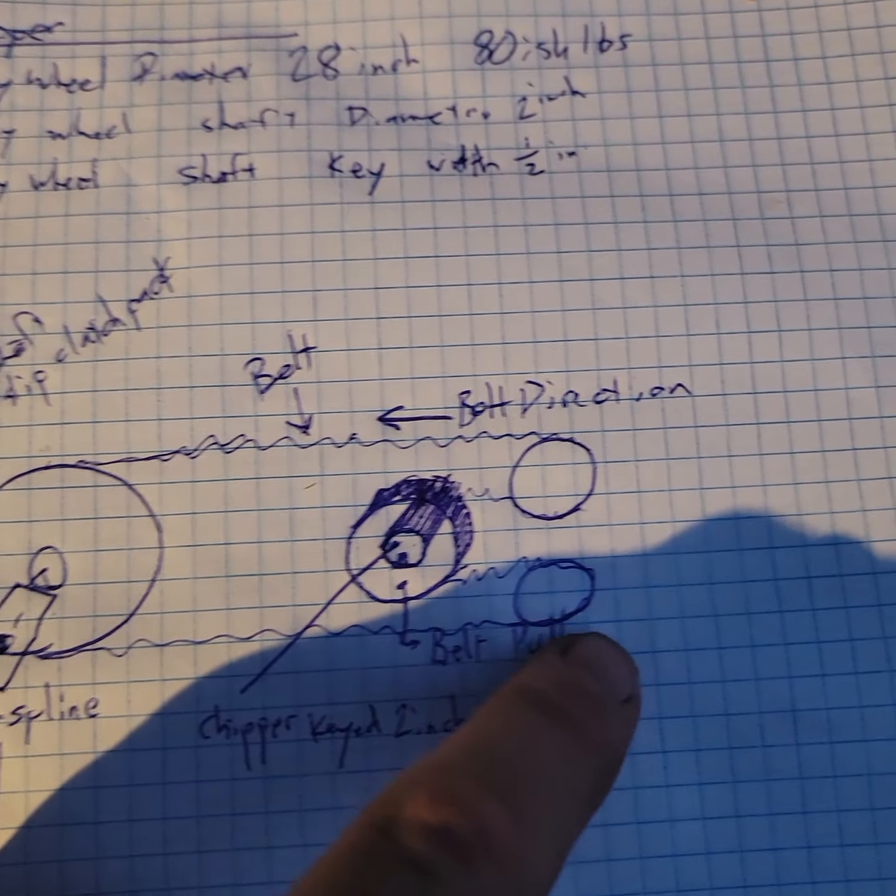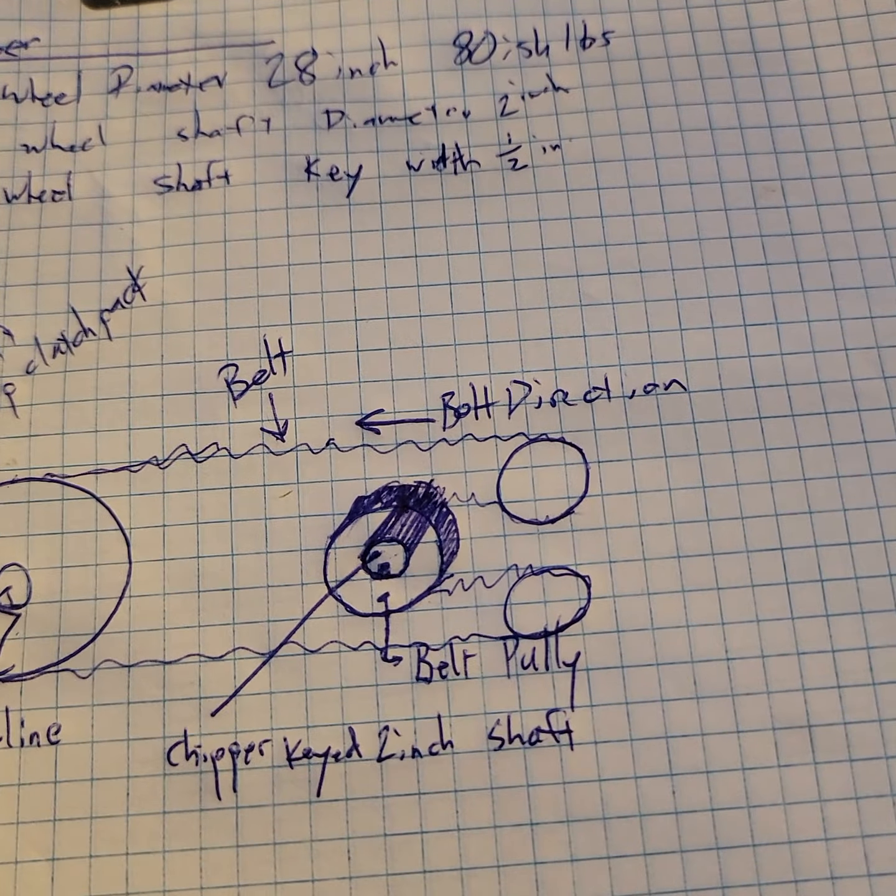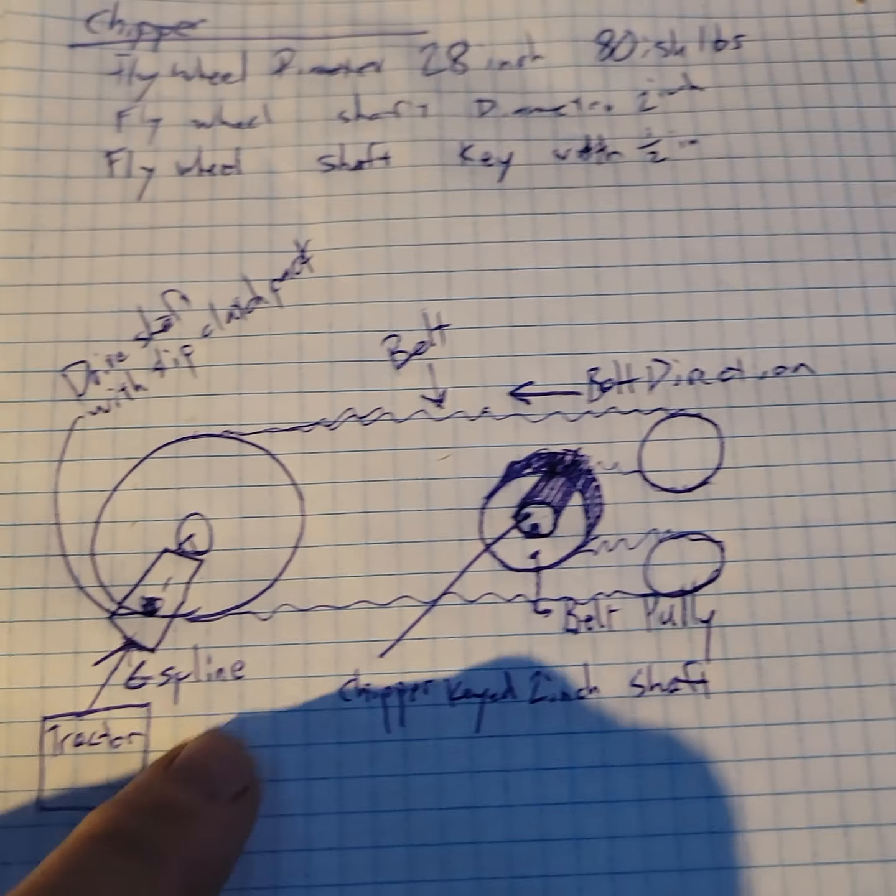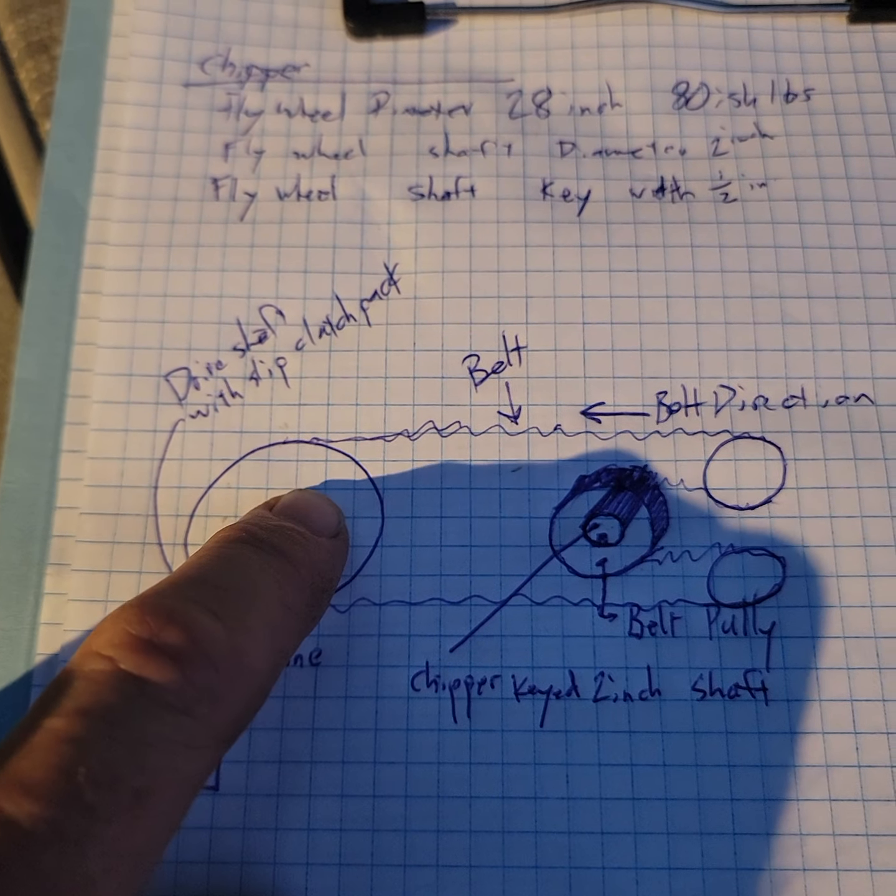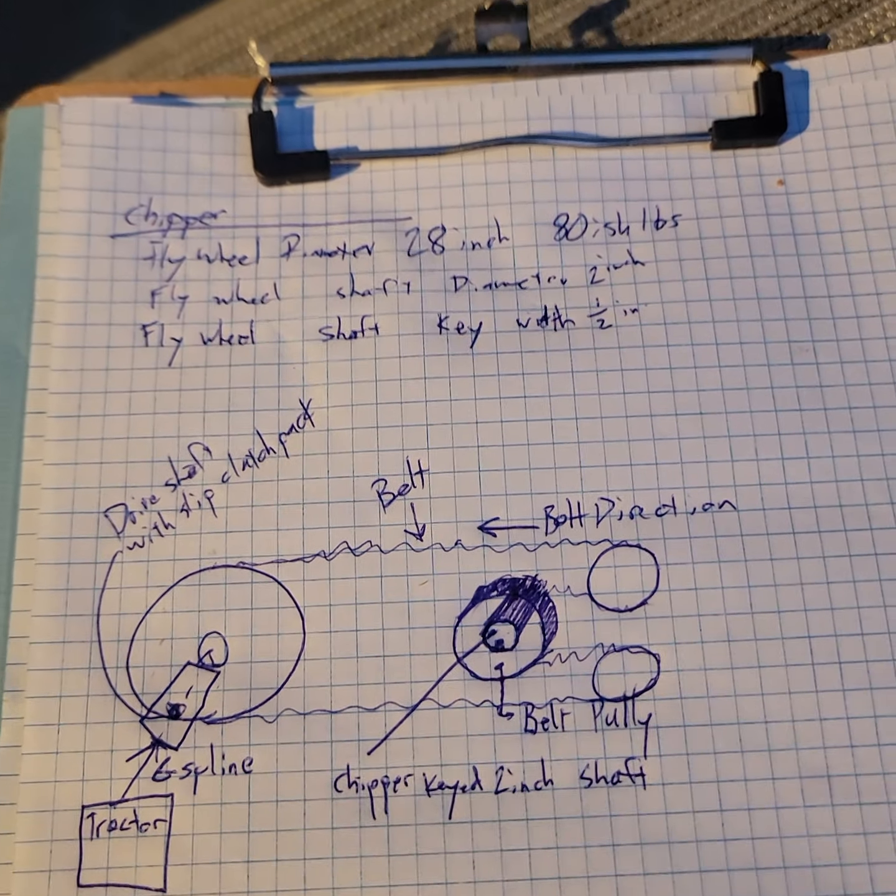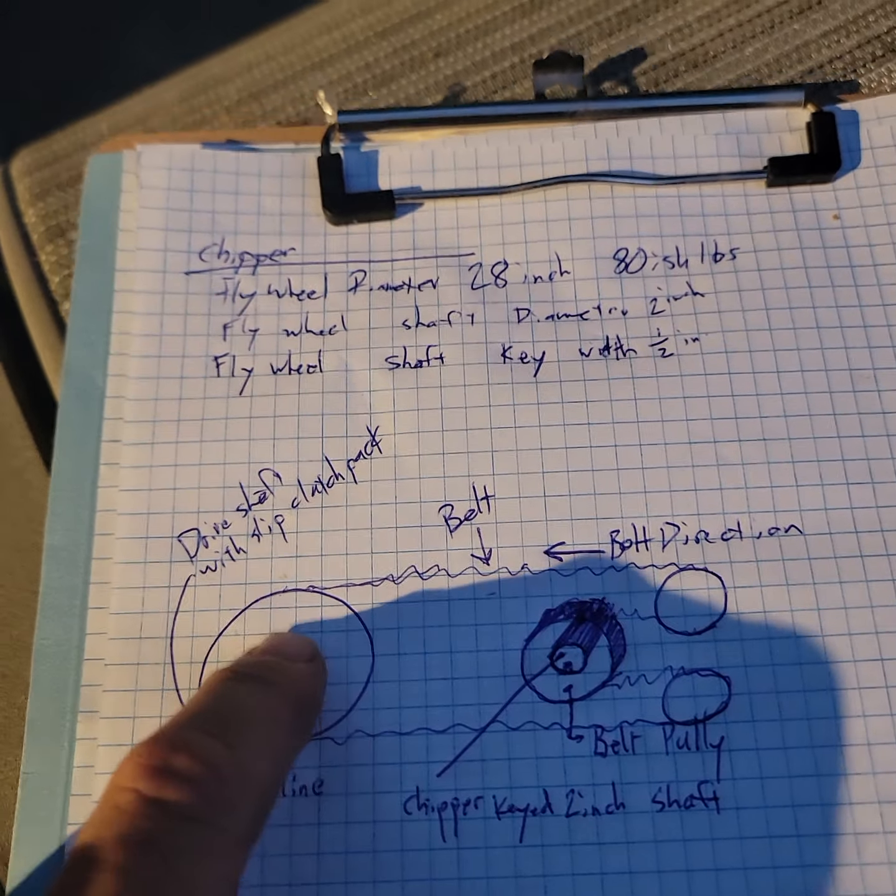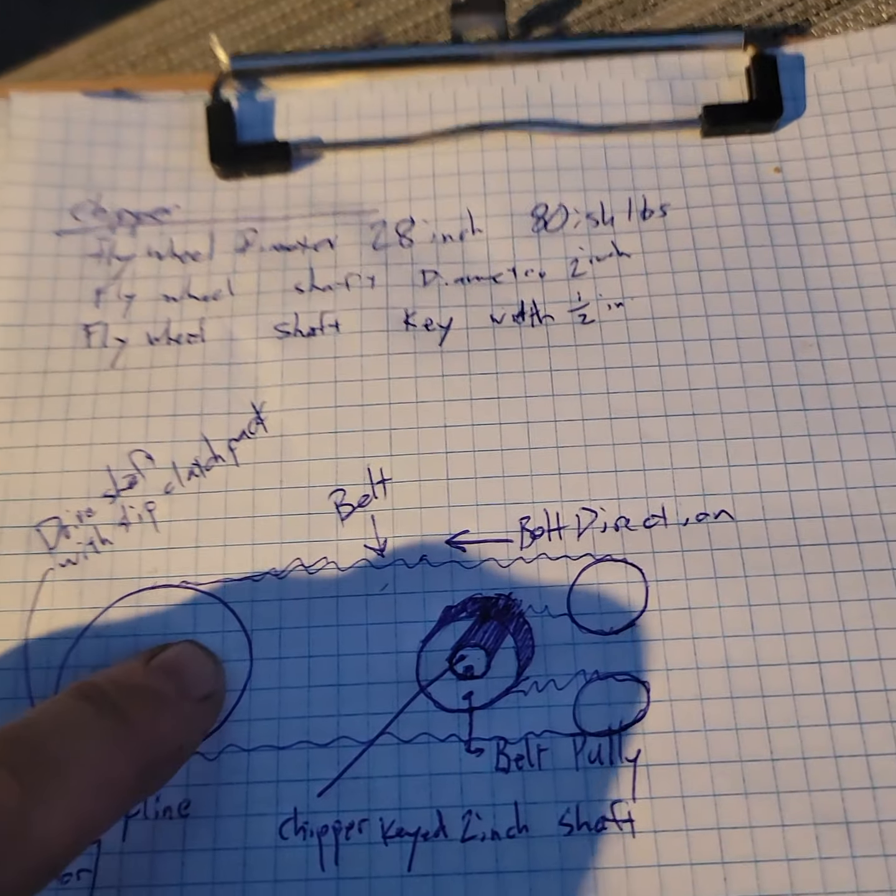Using these idler kind of redirectors, I want to have at least a two-to-one ratio from the power to the output to speed up the output. Because this is only 540 RPM, I want it to go maybe 1200 RPM.